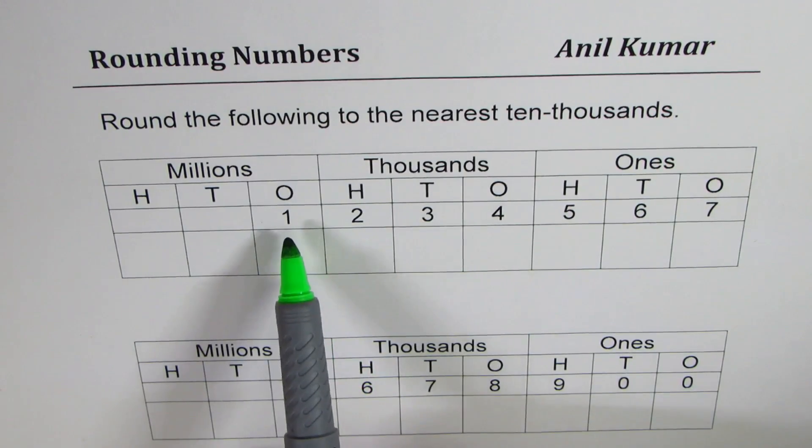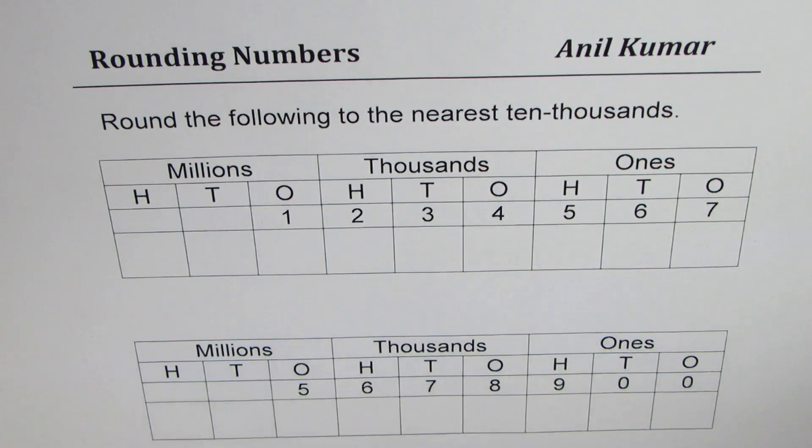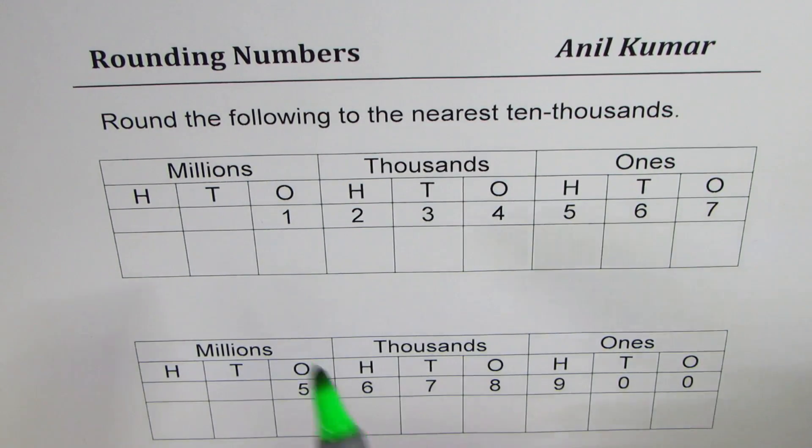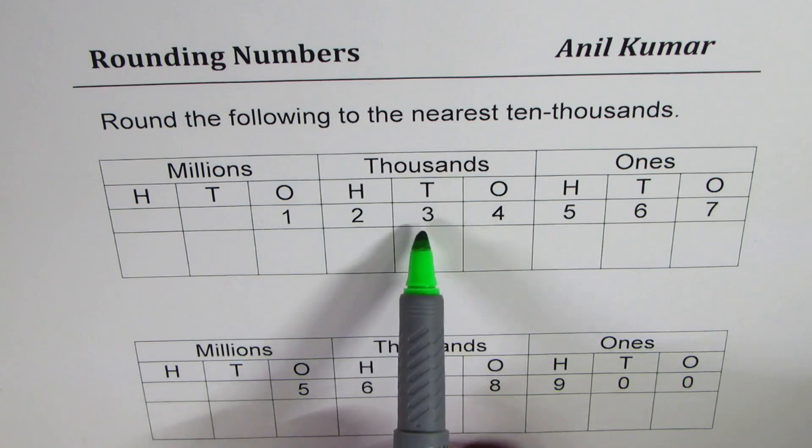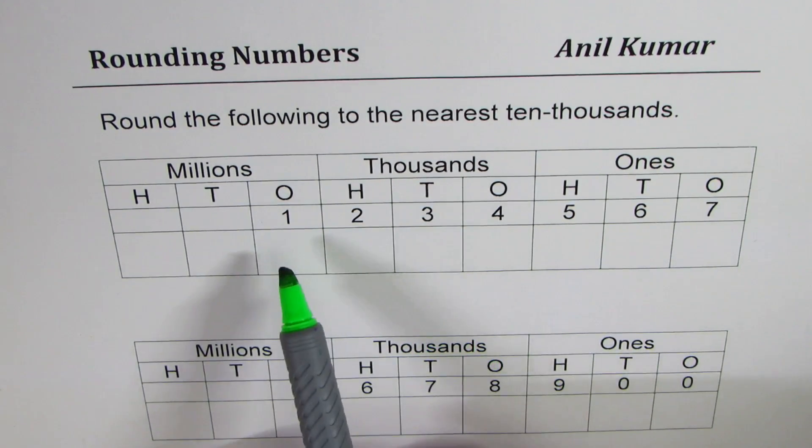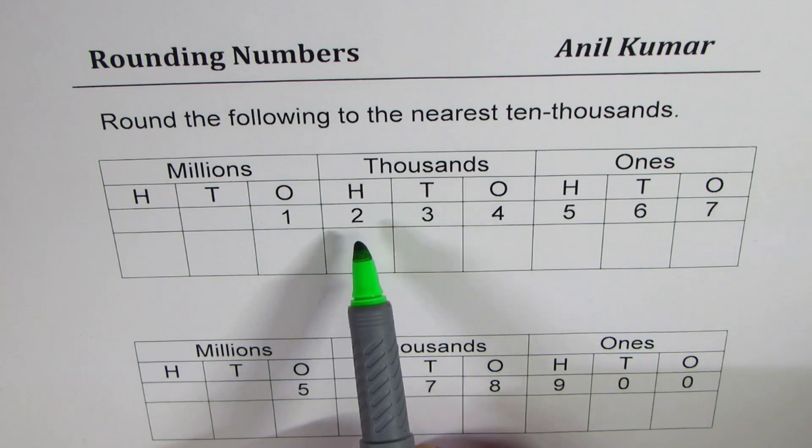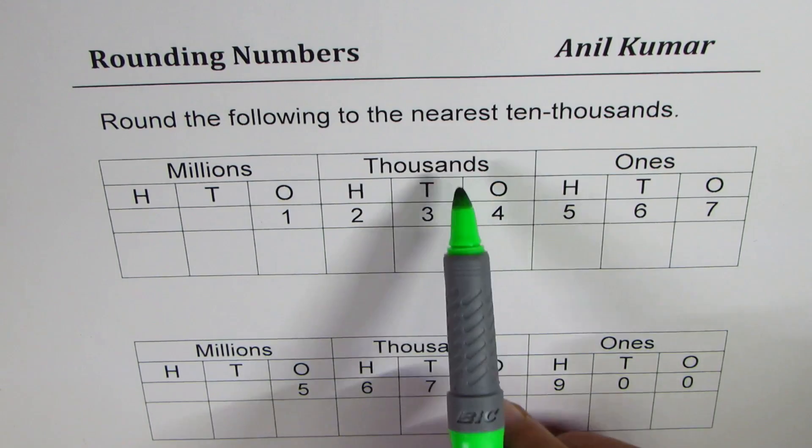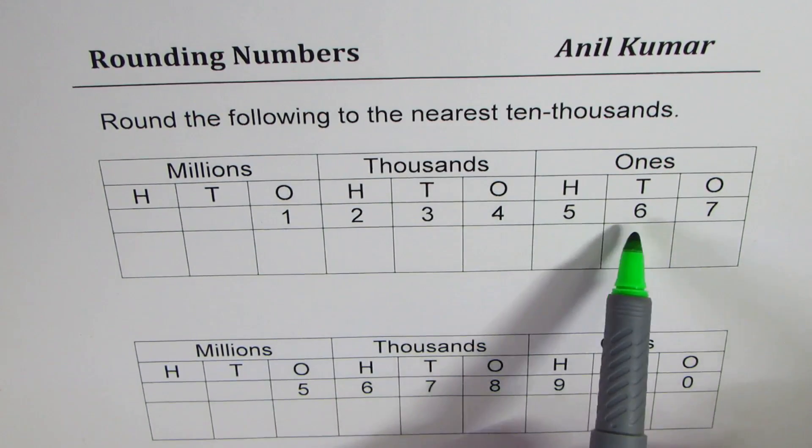The numbers are given in a place value chart so that it becomes easier for us to understand. So the number is 1, 2, 3, 4, 5, 6, 7. So it could be read as 1,234,567.